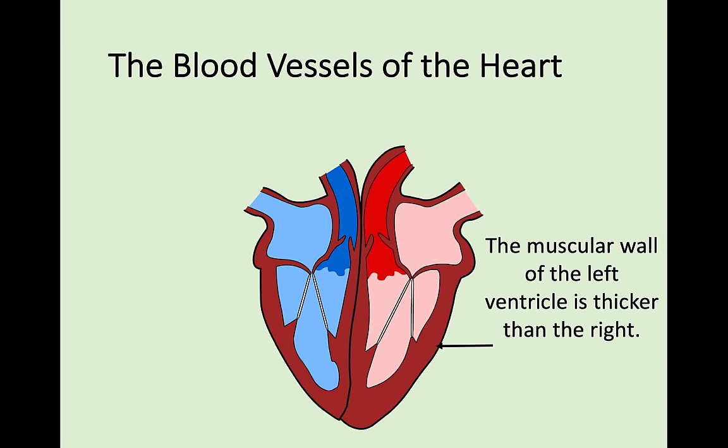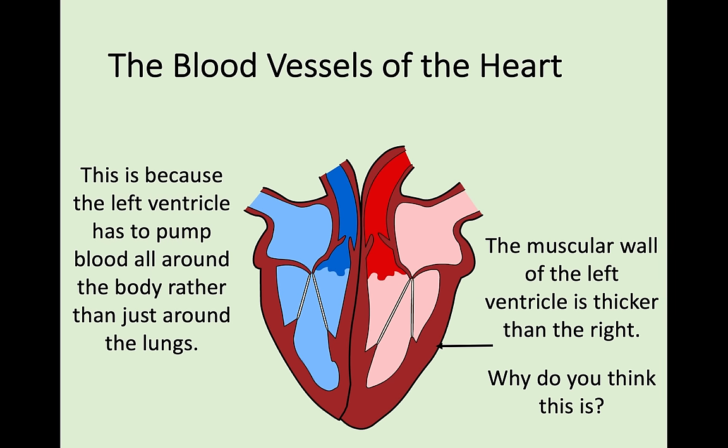You might notice from the diagram that the muscular wall on the left side of the heart is substantially thicker than the right side. The reason is that the left ventricle has to pump blood all over the body. The pulmonary artery sends blood just to the lungs - that's a big job but nothing compared to pumping blood all the way through the entire body. So the left ventricle has to be much thicker to provide more force for blood to go all around the body through the aorta.